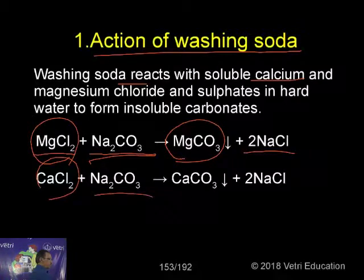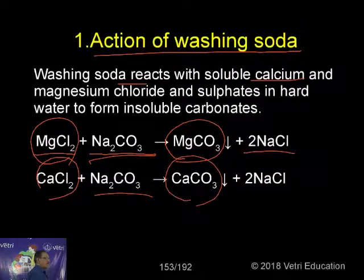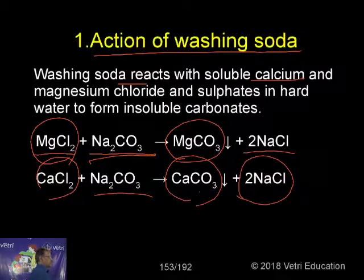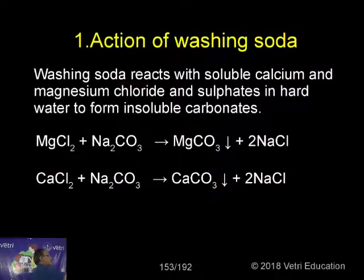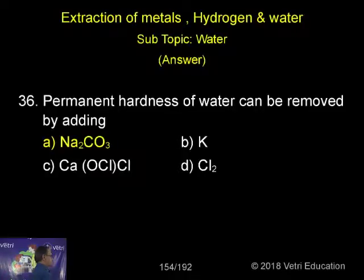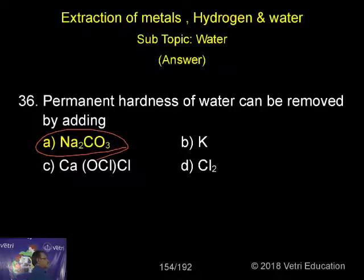Similarly, calcium chloride, when treated with sodium carbonate, produces calcium carbonate as a precipitate, while sodium chloride remains in water. These two precipitates are removed, so the hardness is removed — permanent hardness is removed. The answer is sodium carbonate.